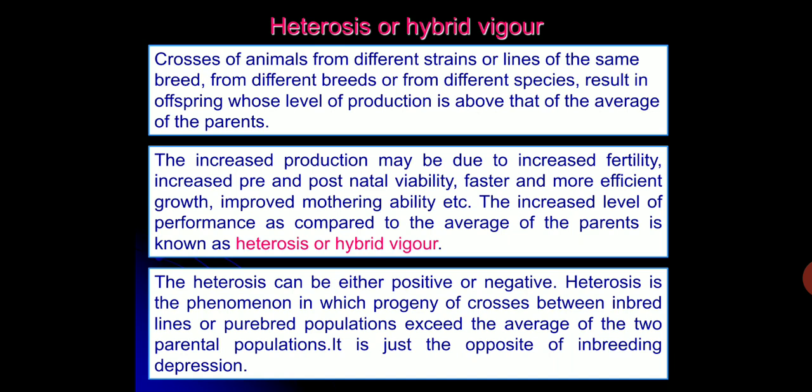This increase in production may be due to increased fertility, increased pre- and post-natal viability — that means ability to sustain life — faster and more efficient growth, and improved mothering ability. It has been seen that in crosses, mothering ability is increased. This increased level of performance in comparison to the average of both parents is known as heterosis or hybrid behavior.